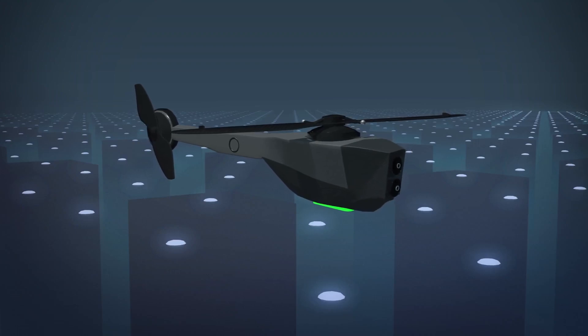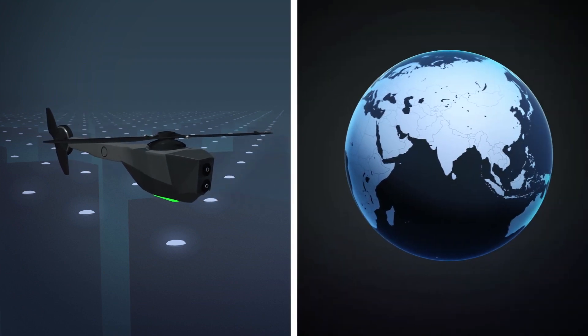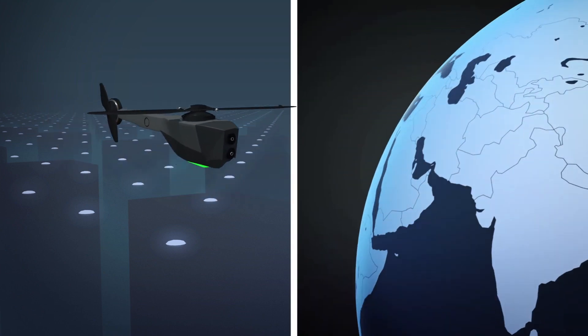The Black Hornet Nano Unmanned Aerial System will be deployed to troops in the 82nd Airborne Division in Afghanistan this month on a trial basis.